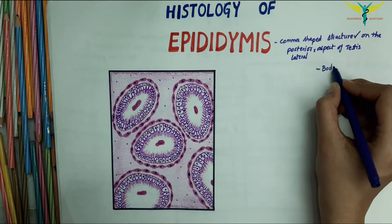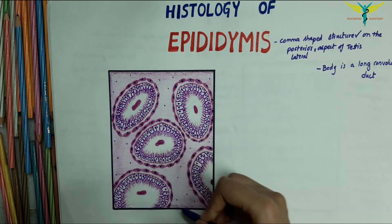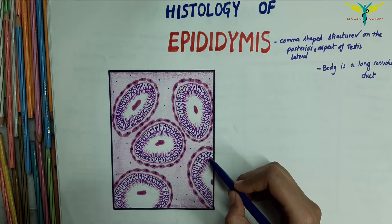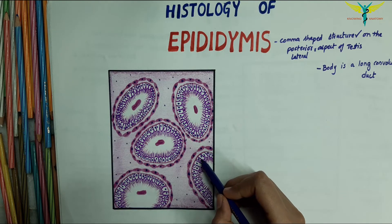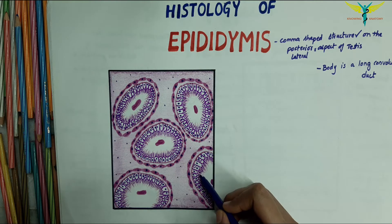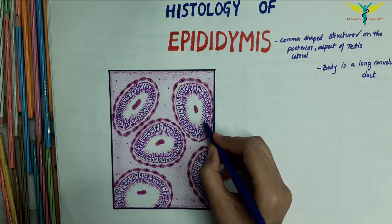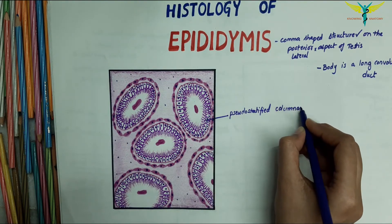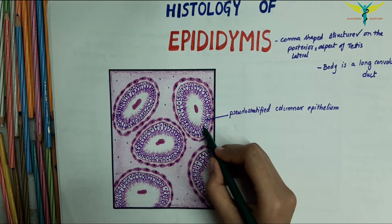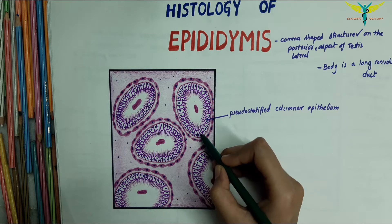Now let's see the brief histology of the epididymis. The body of the epididymis is a long convoluted duct. This section diagram shows a number of tubules lined by pseudostratified columnar epithelium, in which there are tall cells and shorter basal cells that do not reach the lumen. These columnar cells bear stereocilia.